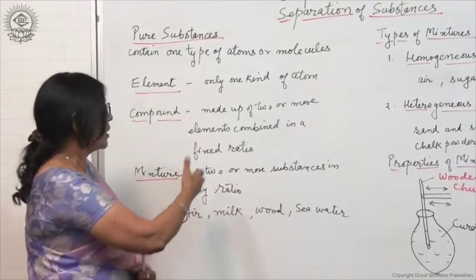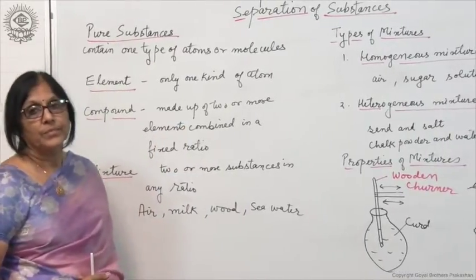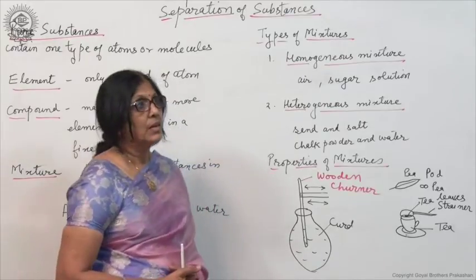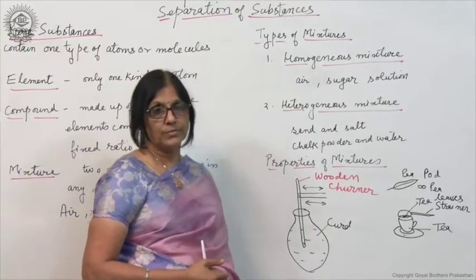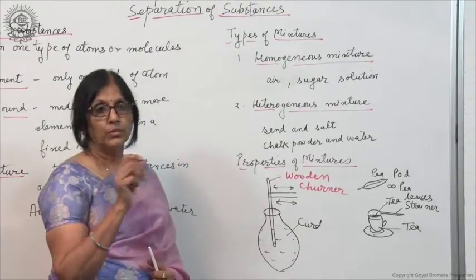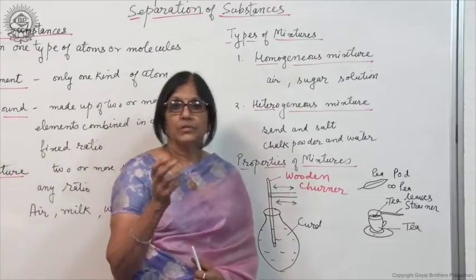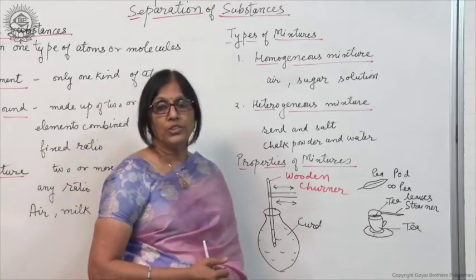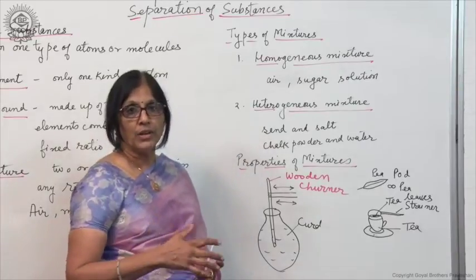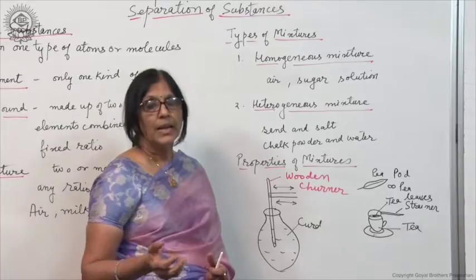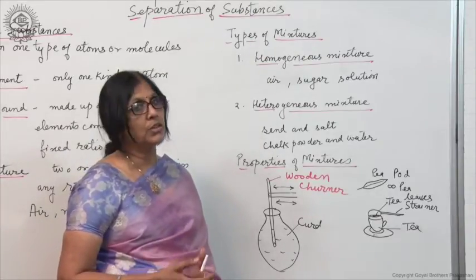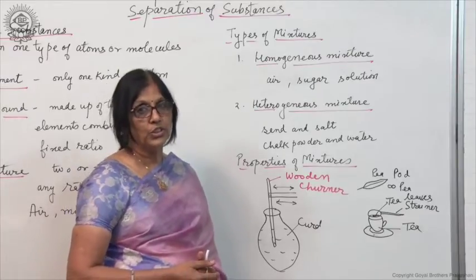Now, mixtures are of two types: homogeneous mixture and heterogeneous mixture. If you dissolve salt in water, you will get a very clear solution. You cannot find salt or separate salt from water—it forms a homogeneous mixture. In a homogeneous mixture, the constituents are uniformly spread throughout with uniform composition. Salt solution, sugar solution, and air are all examples of homogeneous mixtures.